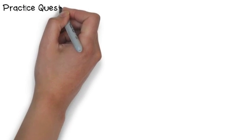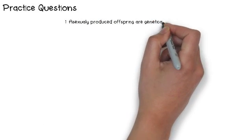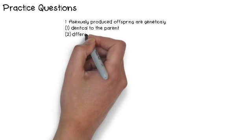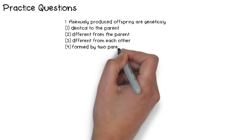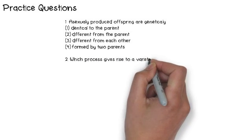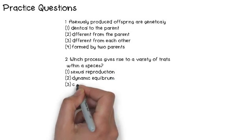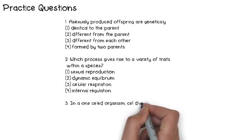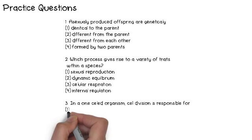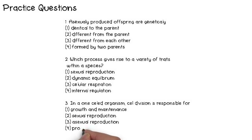Here are some practice questions from the New York State 8th grade exam. Number 1: Asexually produced offspring are genetically — 1) identical to the parent, 2) different from the parent, 3) different from each other, or 4) formed by two parents. Number 2: Which process gives rise to a variety of traits within a species? 1) sexual reproduction, 2) dynamic equilibrium, 3) cellular respiration, or 4) internal regulation. Number 3: In a one-celled organism, cell division is responsible for — 1) growth and maintenance, 2) sexual reproduction, 3) asexual reproduction, or 4) production of sex cells.